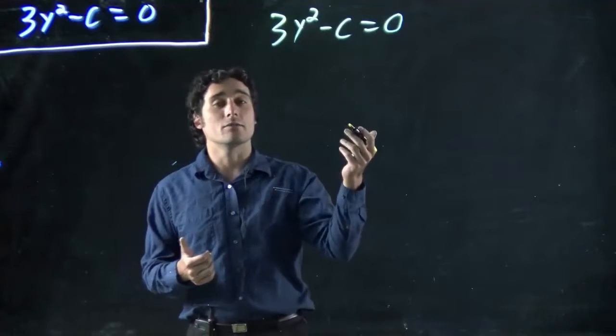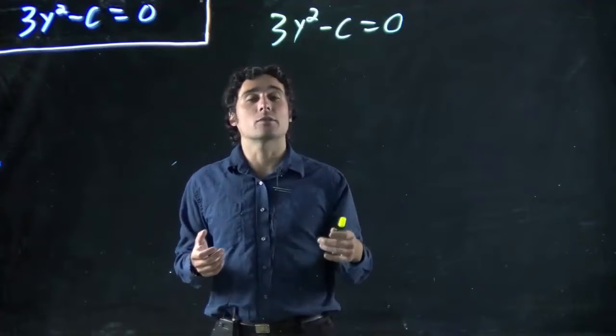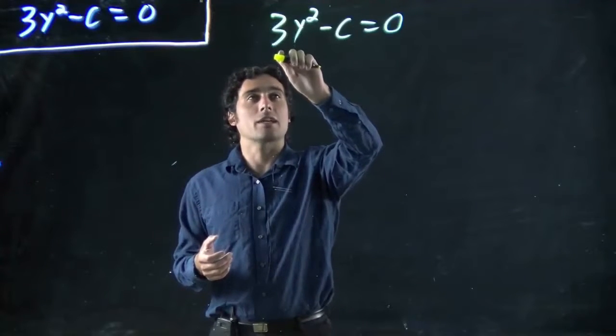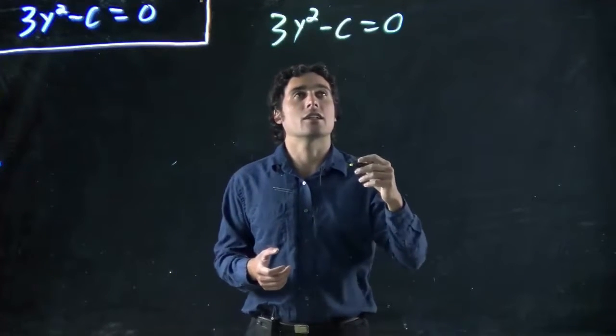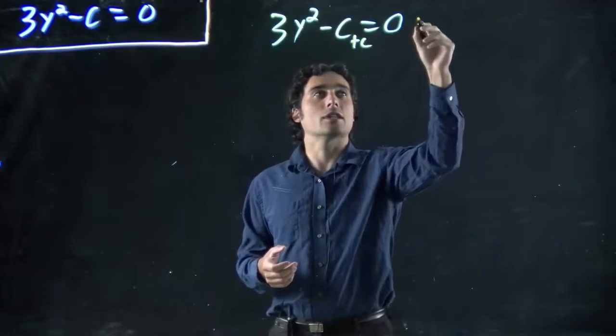So what do I got to do? I got to get y on its own ultimately. Solve for y. Well, reverse BEDMAS, I look, I got to do subtraction, then the multiplication, then the exponent. If I'm going to cancel out a subtraction, what am I going to do? I'm going to add c to both sides.